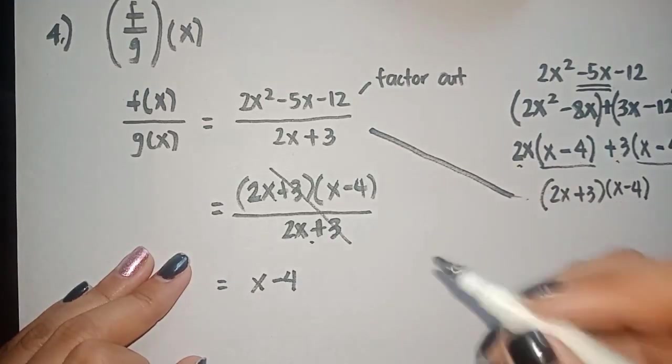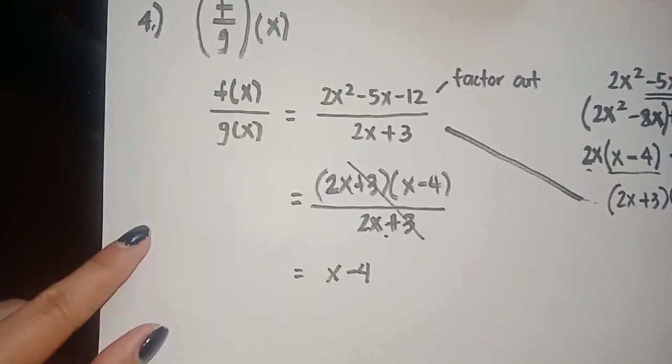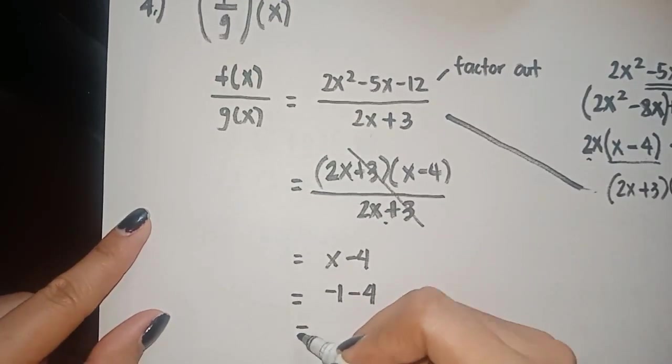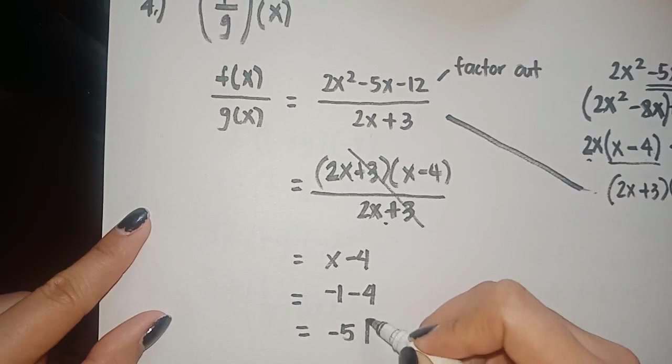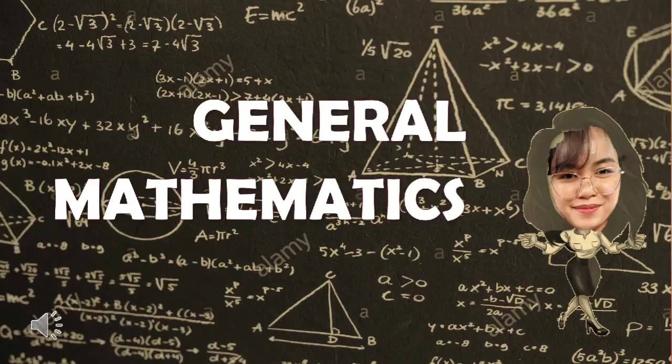And we are left with x minus 4. This is not yet the final answer since we have a value of x, and that is negative 1. So substitute. We have negative 1 minus 4, and that is equal to negative 5. Thank you for watching.